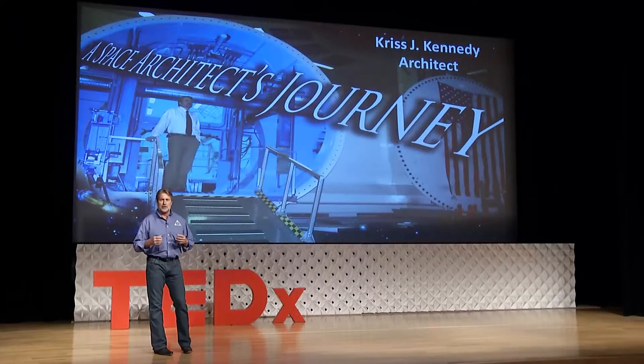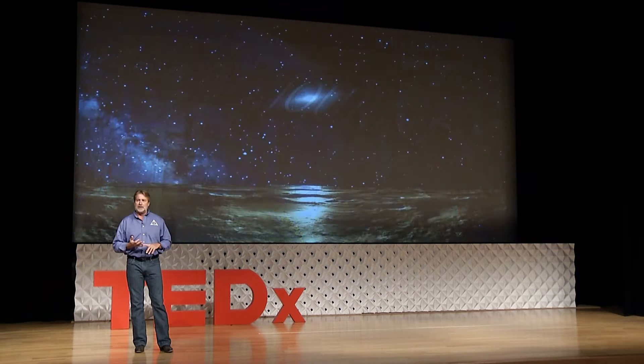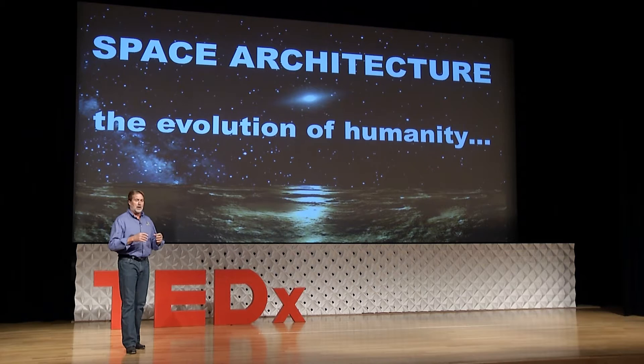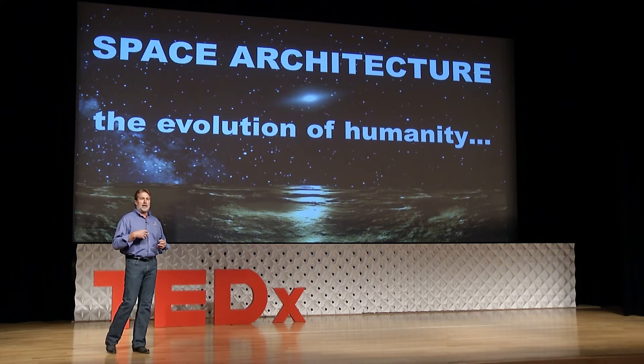If you think about architecture and its beginnings and where it came from, it really began with the four basic needs for humans: food, water, companionship, and shelter. Shelter began from caves and skins stretched over rocks and stretched over sticks. With that, it became the shelter architecture. From that, we have evolved, and so has humanity evolved, and so has architecture along with it.